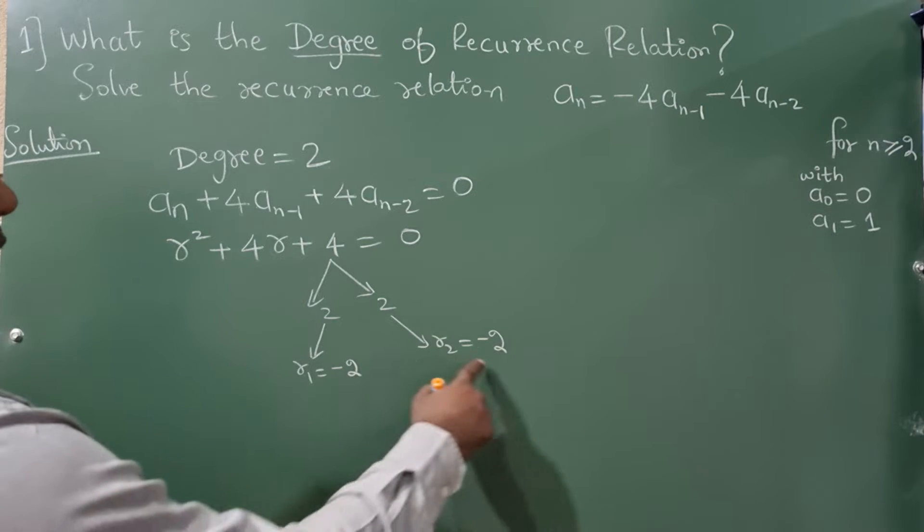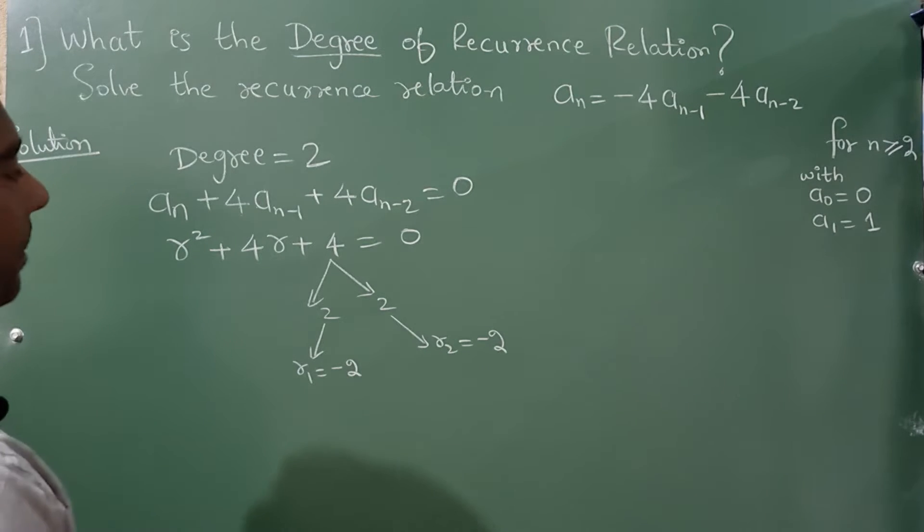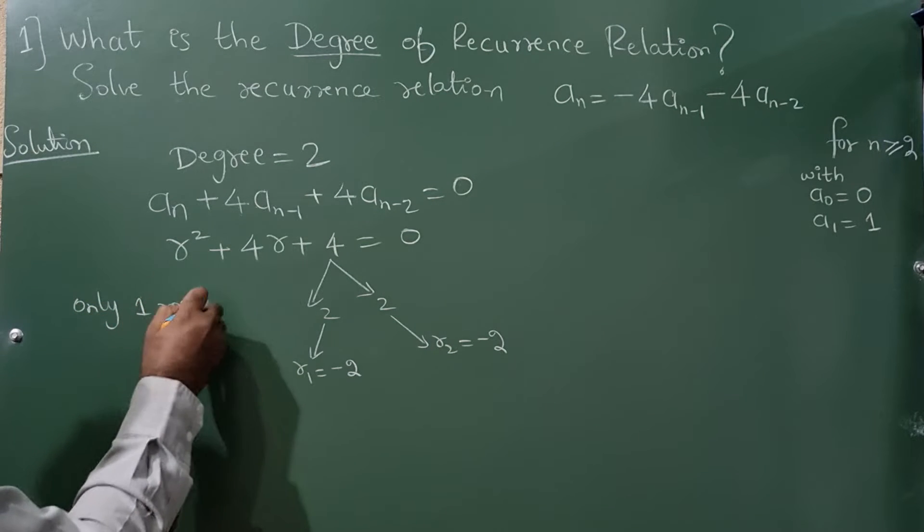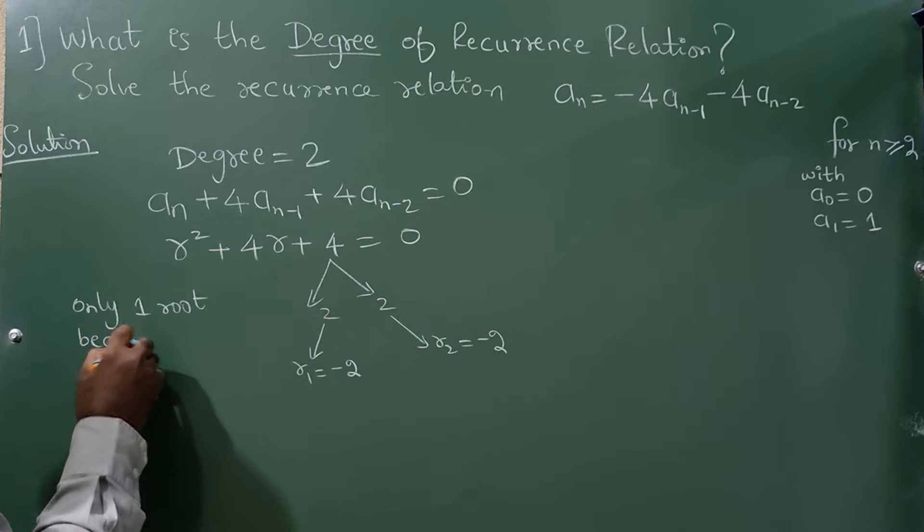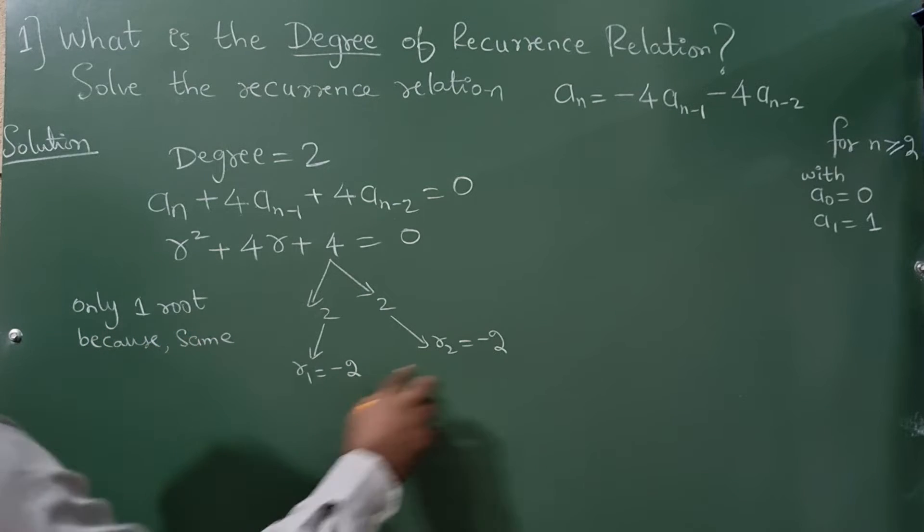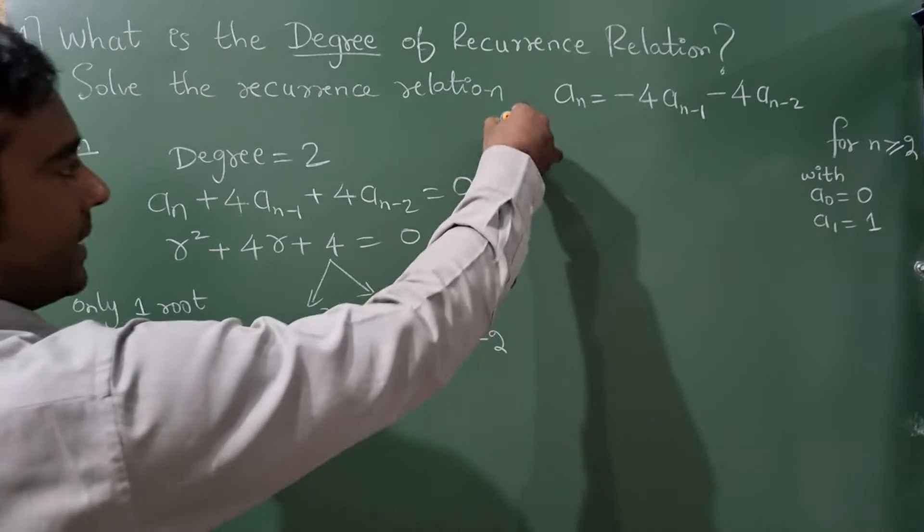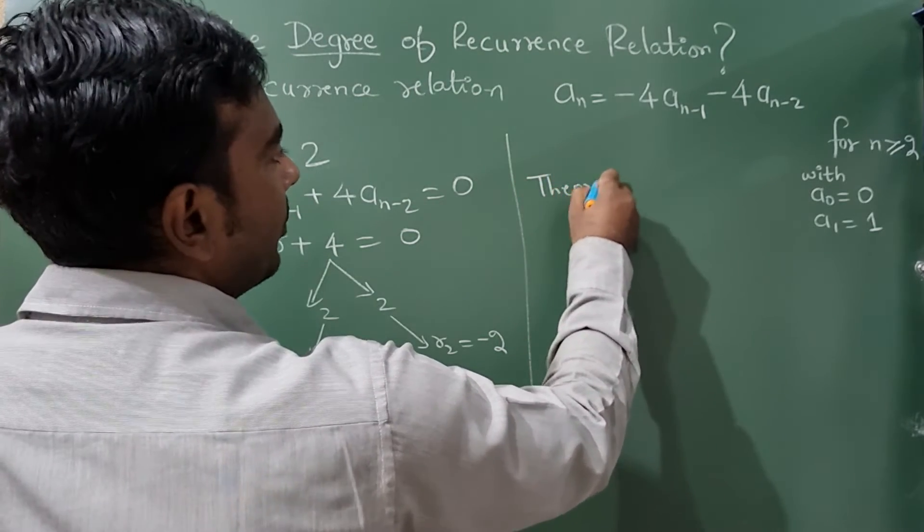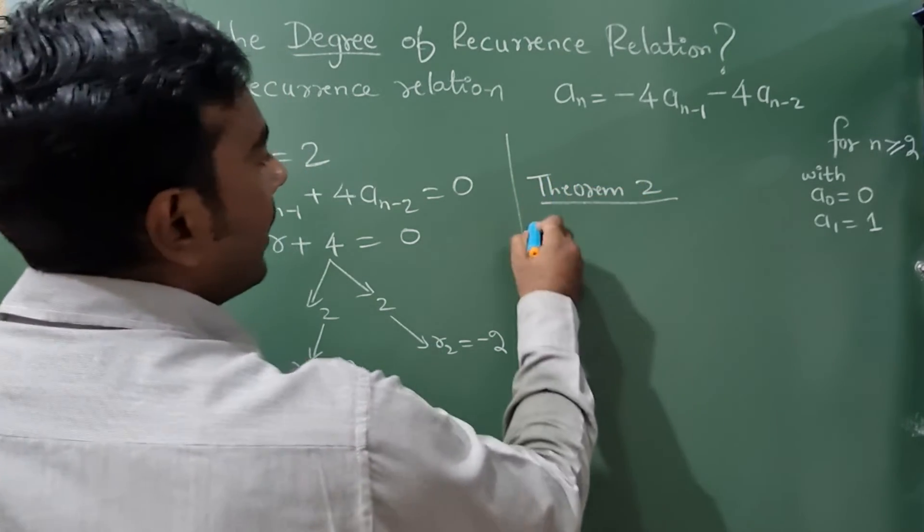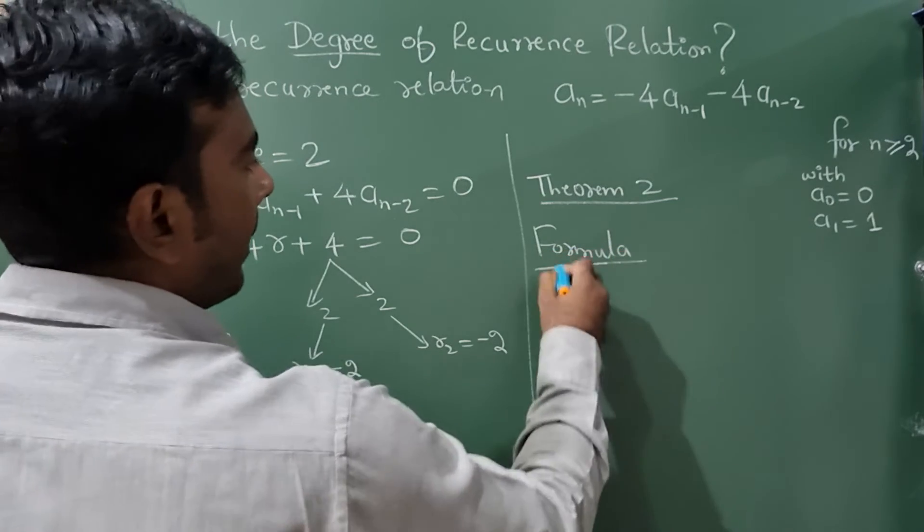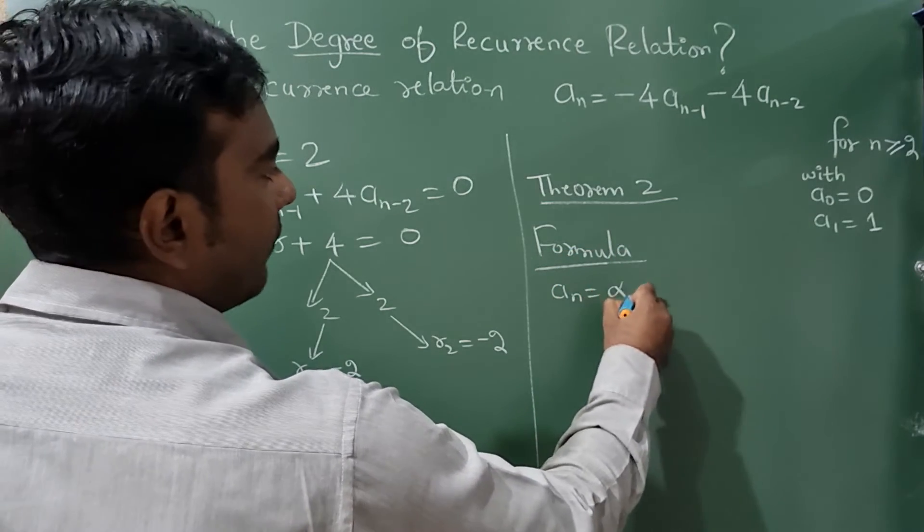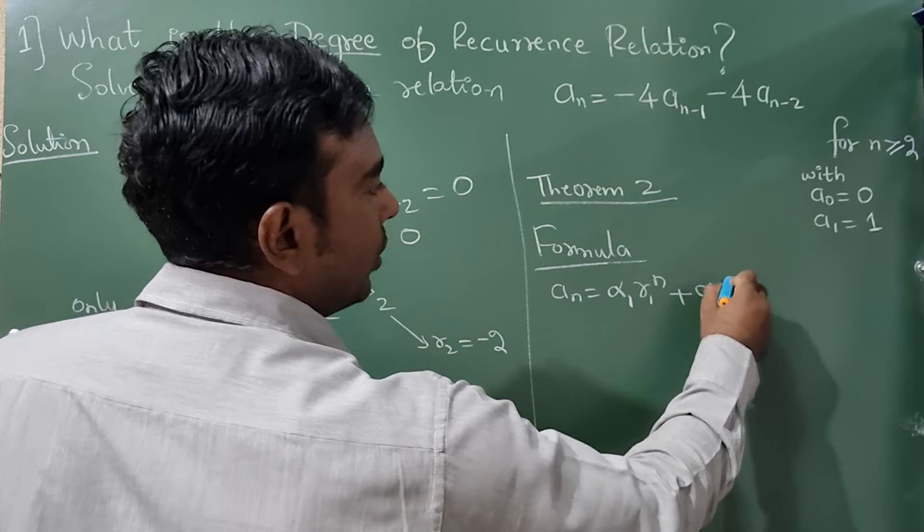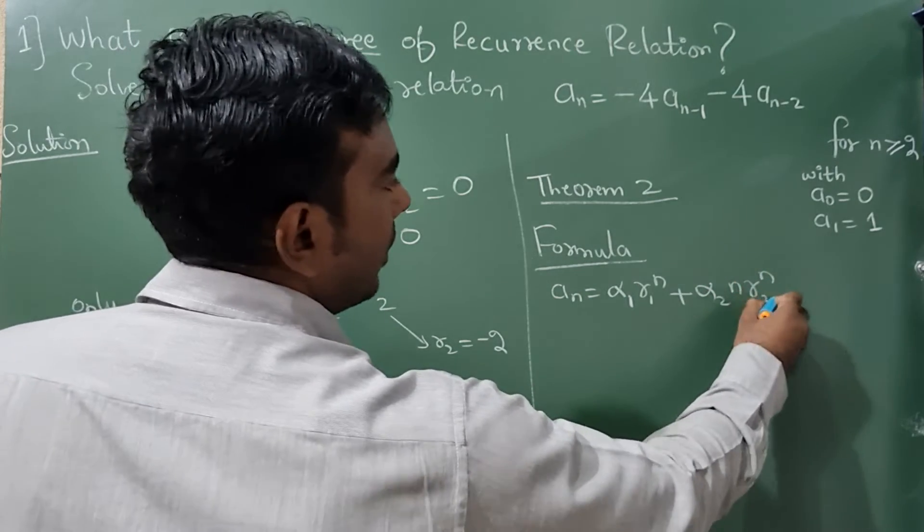Now these two roots are same. You can tell only one root because same value. Now when there is a same root then you have to apply theorem 2 and the formula is a_n = α₁r₁ⁿ + α₂n·r₂ⁿ.